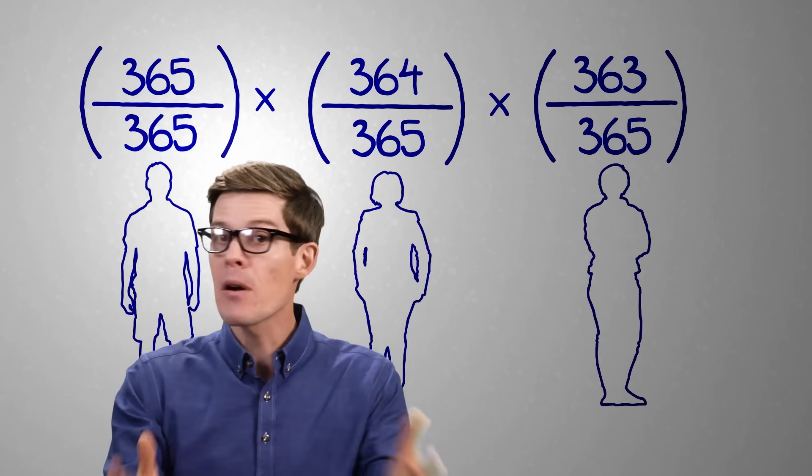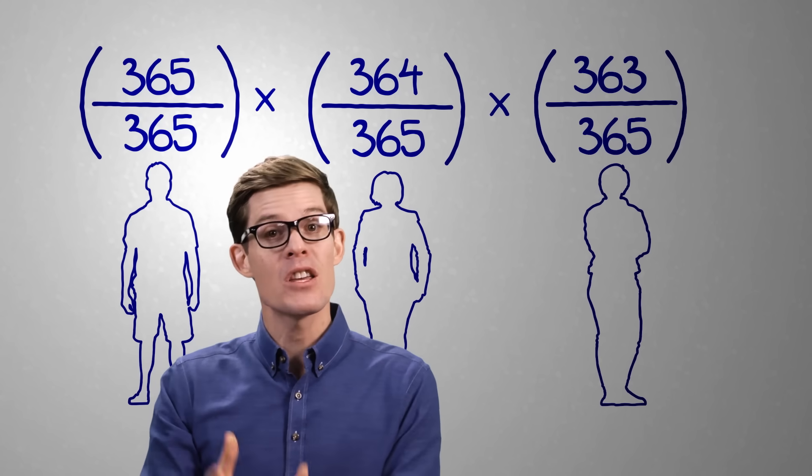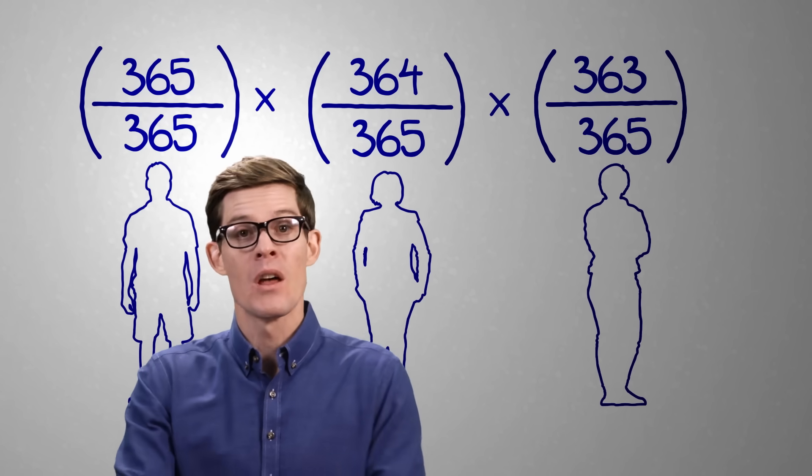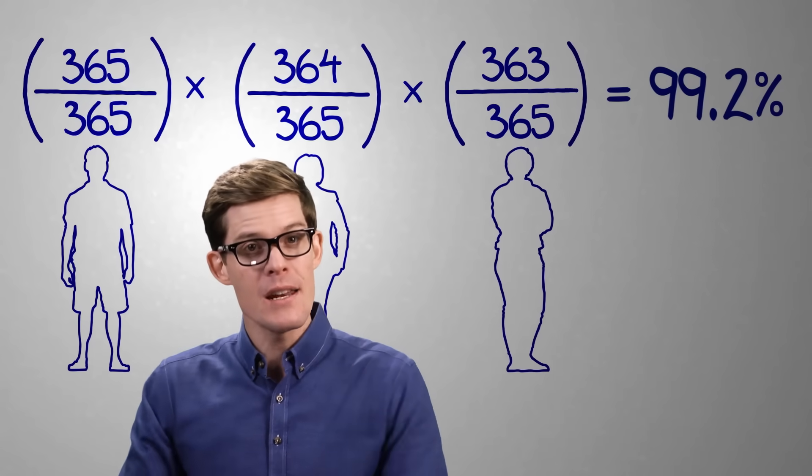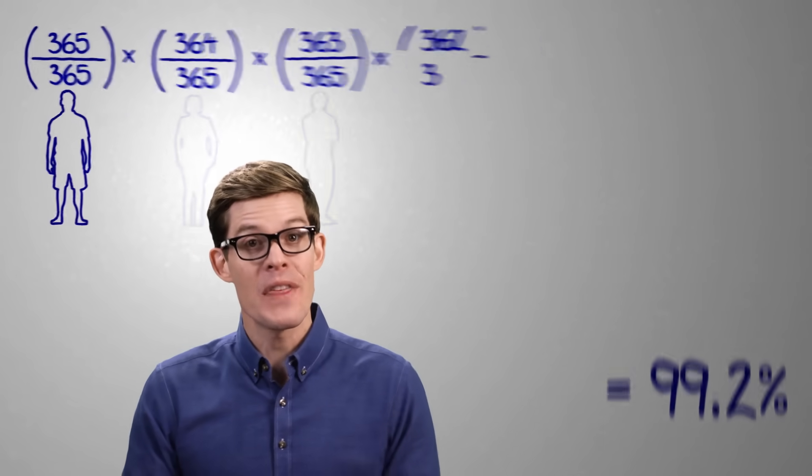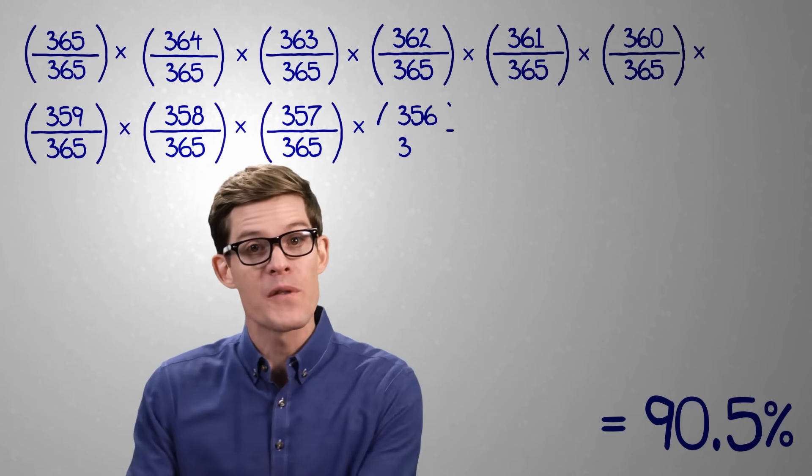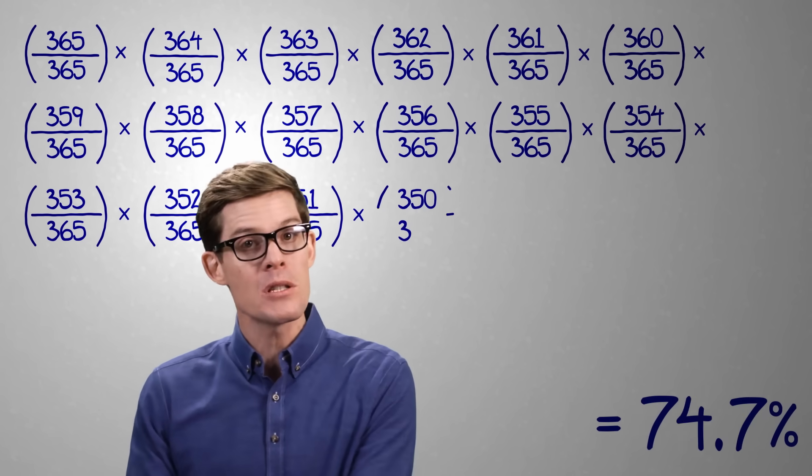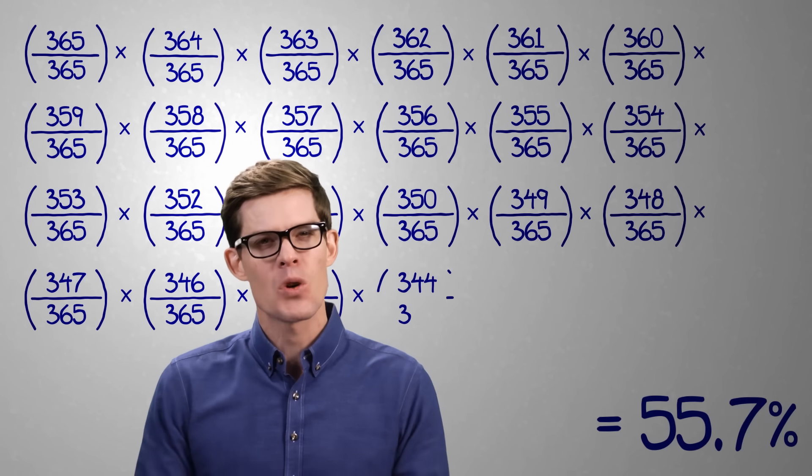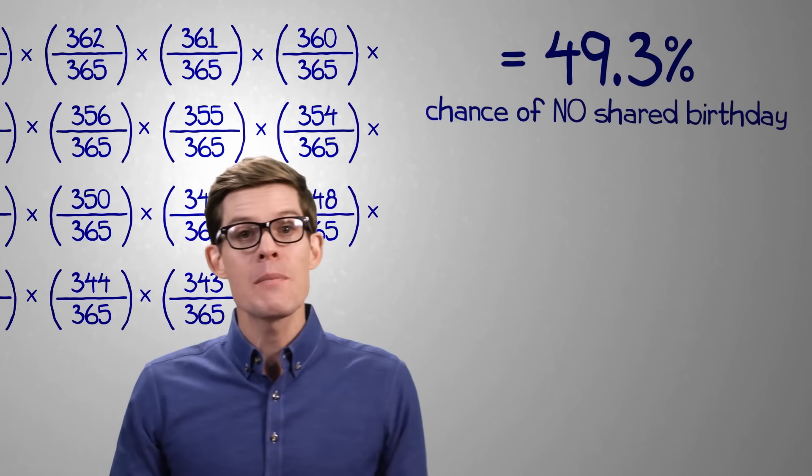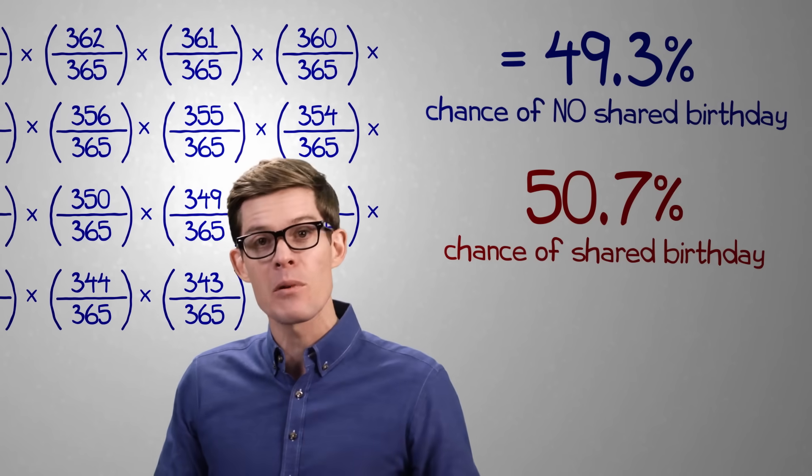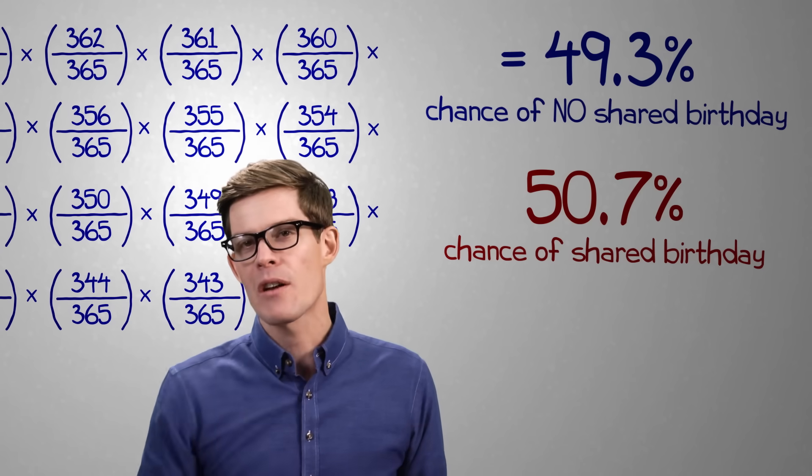So the chance that you, person number two, and person number three have a unique combination of birthdays with no one sharing is about 99.2%. With every new person we add to the room, there's one fewer birthday available, and we continue to multiply the combinations. 23 people. That's all the people we need before you have a greater than 50% chance of two sharing a birthday.